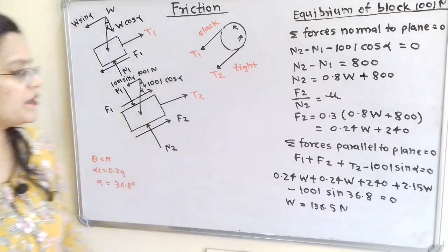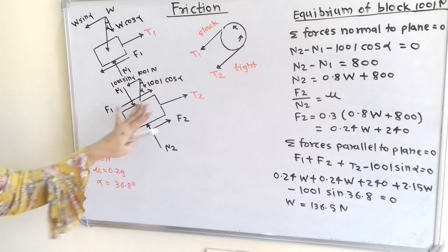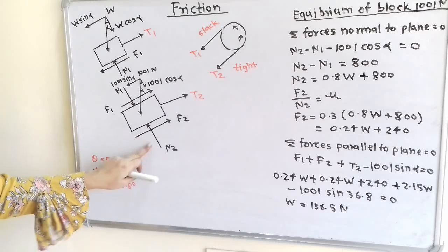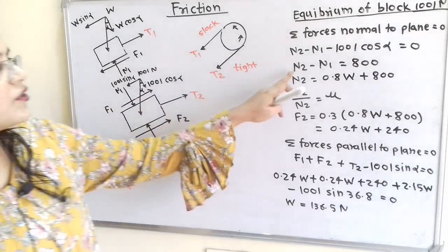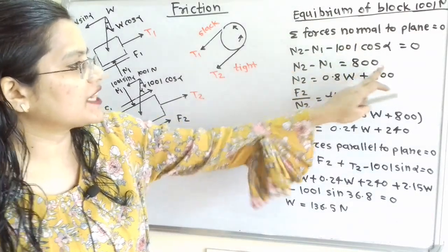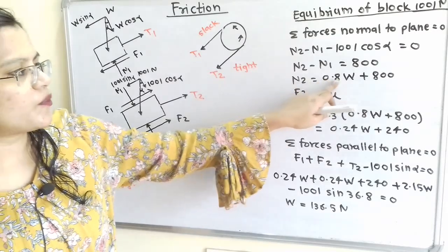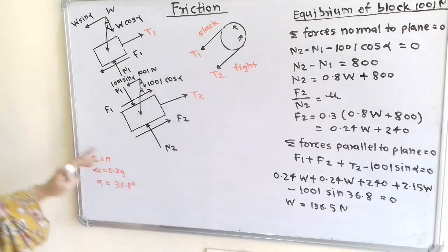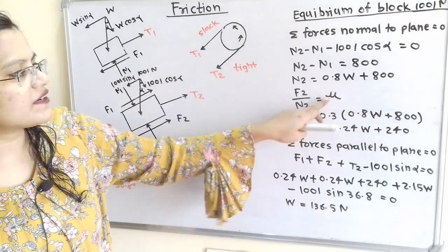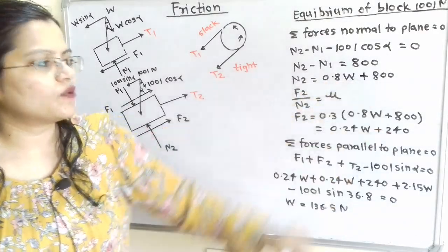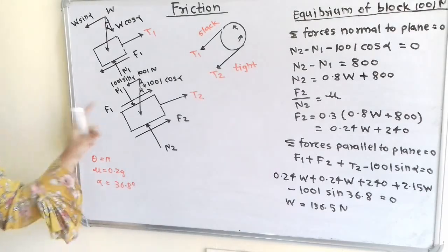Now considering equilibrium of the 1001 Newton block, summing forces normal to the plane: N2 − N1 − 1001·cos(alpha) = 0, so N2 = 0.8W + 800. By the law of friction, F2 = 0.3 × (0.8W + 800) = 0.24W + 240.